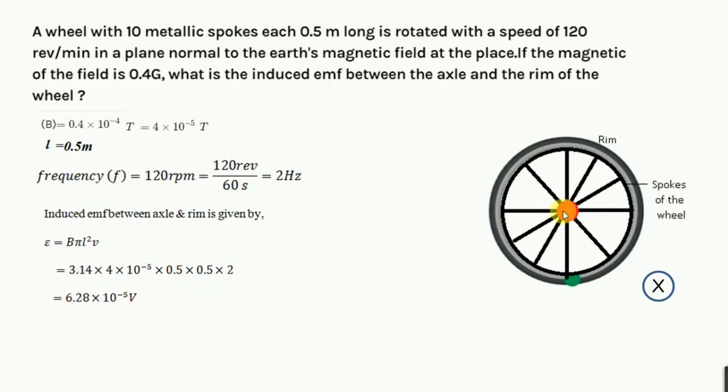Now all these spokes are connected in parallel way, so all one points are connected out here, all other points are connected out here. So this is the parallel combination, and we know in parallel combination EMF due to all will be equal to EMF due to one.